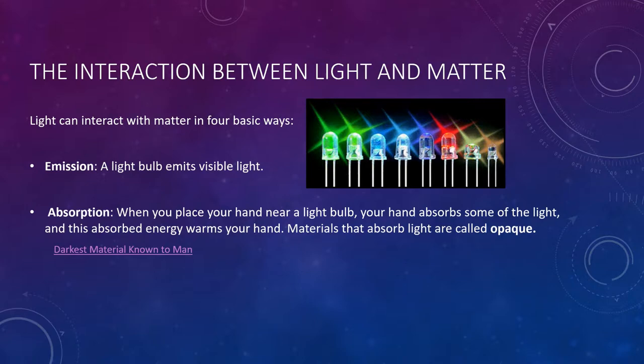We have absorption, which is when you place your hand near an incandescent lightbulb. You can feel that your hand is absorbing some of the light because it warms your hand. Materials that absorb light are called opaque. Now here I have a video called The Darkest Material Known to Man. I won't play it for copyright issues, so if you would, I would recommend pausing the video here and looking at the description of the video on YouTube. It's really interesting.